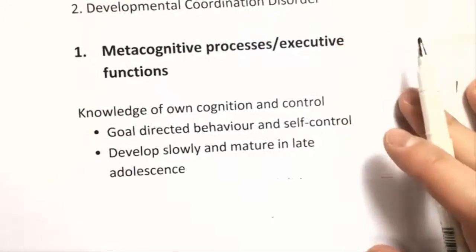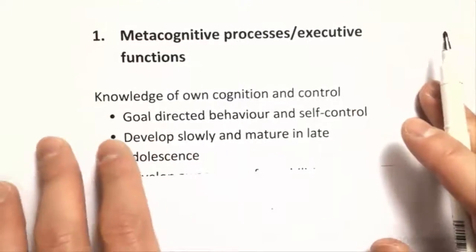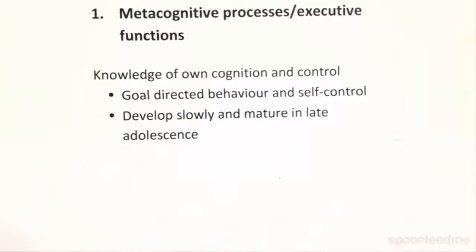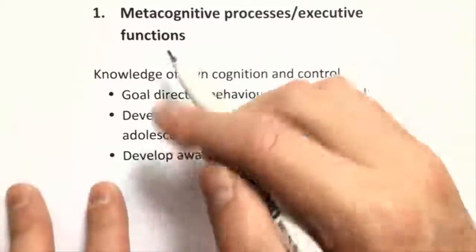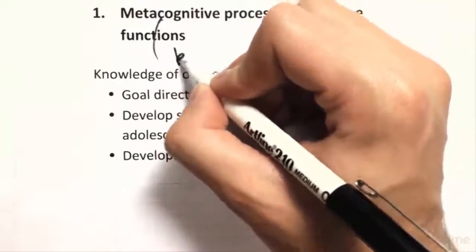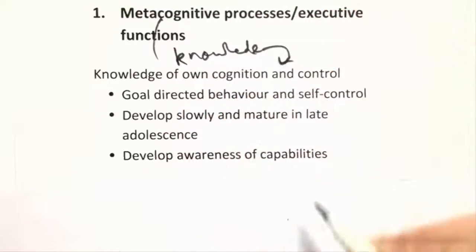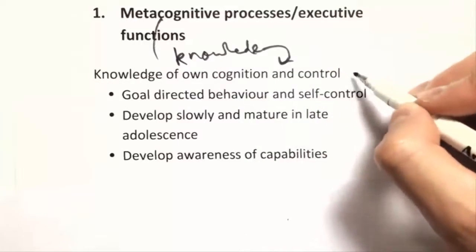So as we go, we start, like we saw before, we get more control, more development of the way we see ourselves and our behavior. So metacognition refers to this kind of knowledge of own cognition and that control on the cognitive abilities.